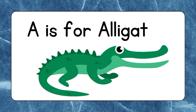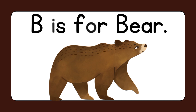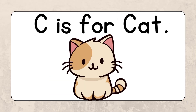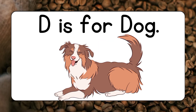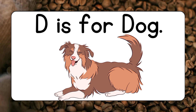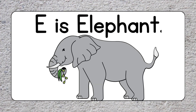A is for Alligator. B is for Bear. C is for Cat. D is for Dog. E is for Elephant.